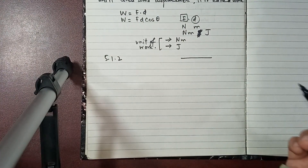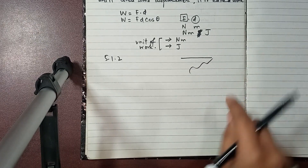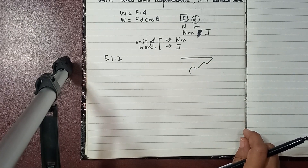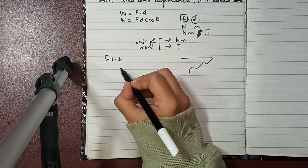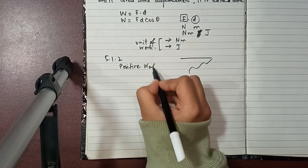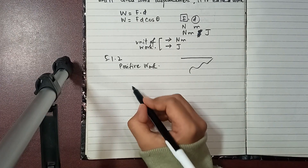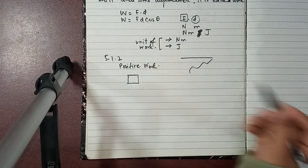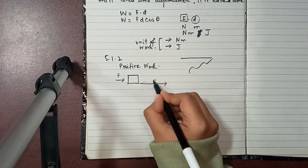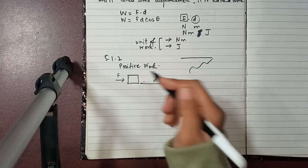For a variable force, its magnitude can change and its direction can also change. Now if the force and displacement are in the same direction, the work is positive.